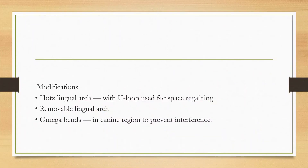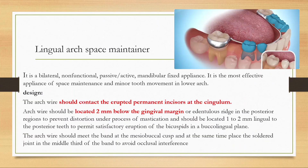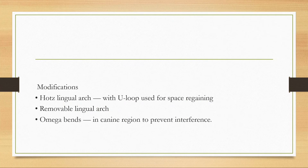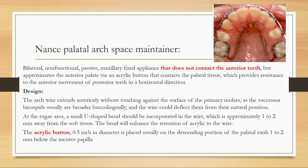Modifications for the lingual arch space maintainer include a Hawley lingual arch with a U-loop for space regaining, a removable design, and omega bends in the canine region to prevent interference. For the maxillary arch, the Nance palatal arch is used — a bilateral, non-functional, passive, fixed appliance that does not contact the anterior teeth.